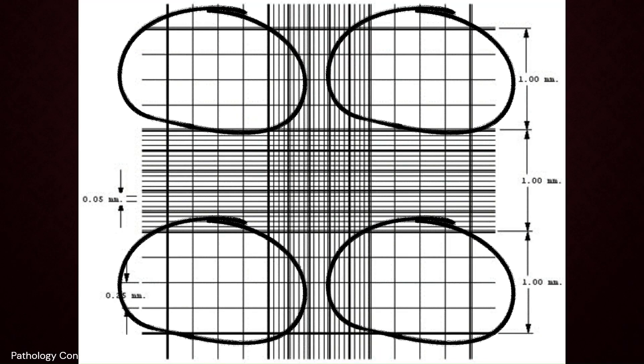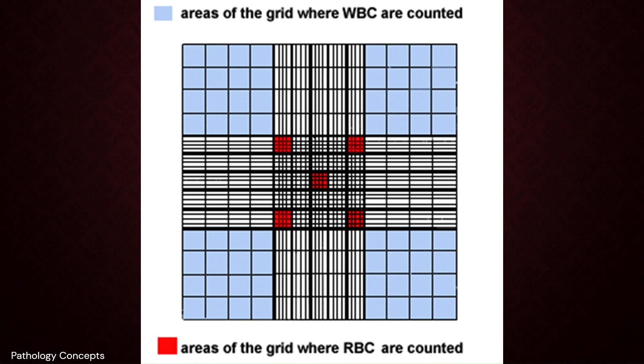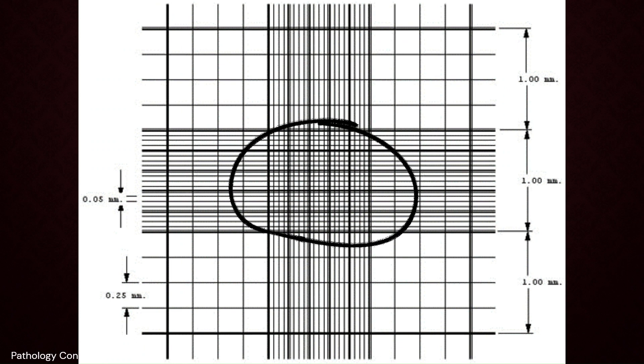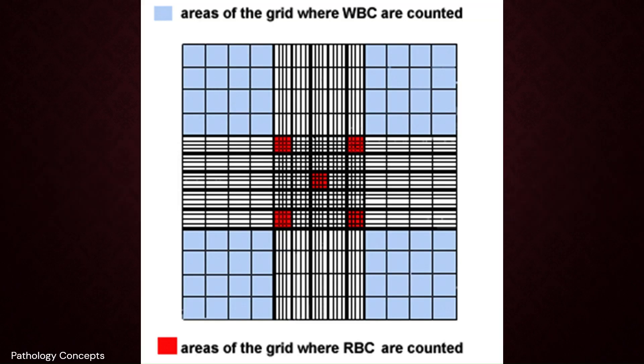There are four corner squares, each containing 16 small squares, which are used for WBC counting in blood, fluid, and CSF. The central one square containing 25 small squares is used for RBC count. Each square measures 1 mm and the depth is 0.1 mm. These measurements are useful in calculating cells in the Neubauer chamber.